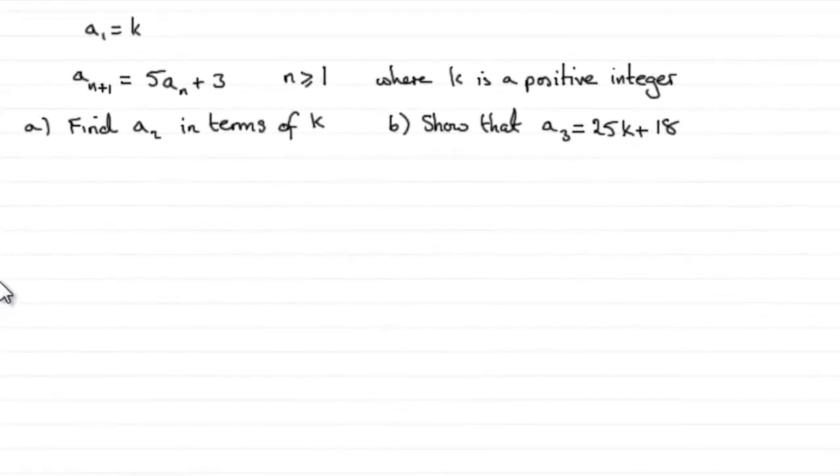Now for the first two parts of this question, we're given a sequence which is defined as the first term a₁ equals k, and then subsequent terms a_{n+1} equals 5 times the previous term a_n plus 3, where n is greater than or equal to 1 and k is a positive integer.